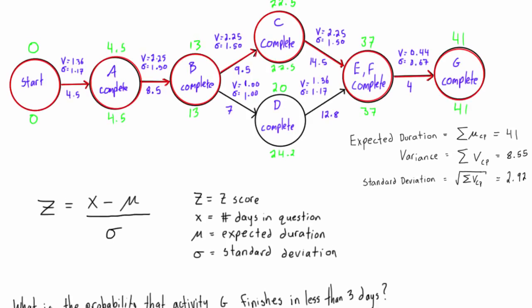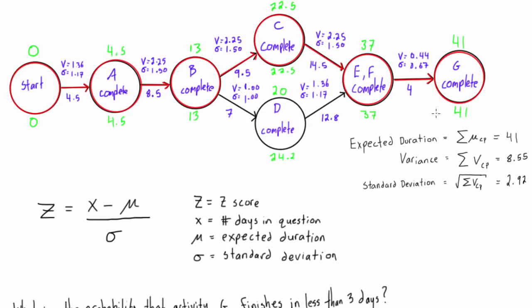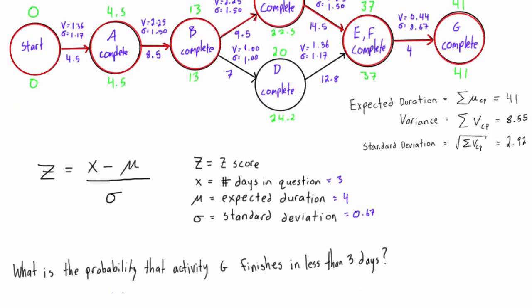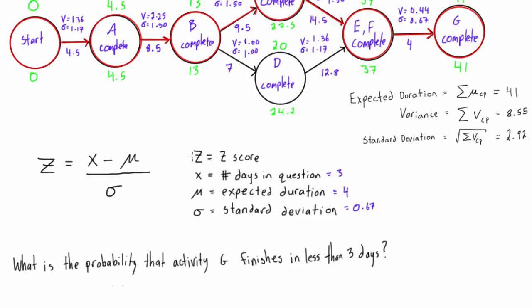What is the probability that activity G finishes in less than three days? We know that activity G's expected duration is four days — we can see that from the network diagram. Its standard deviation is 0.67. In this case we're looking at the probability that it finishes in less than three days, so X will be 3. All we have to do is plug our values into the z-score equation: z equals x minus mu, so we have 3 minus 4, all over 0.67.